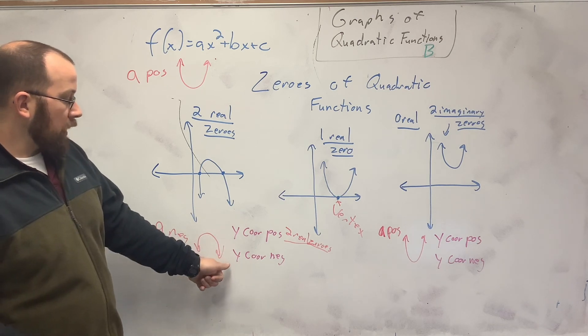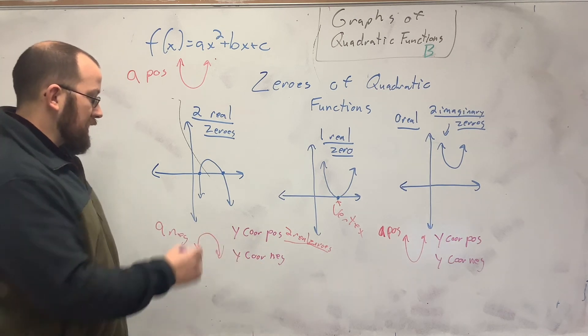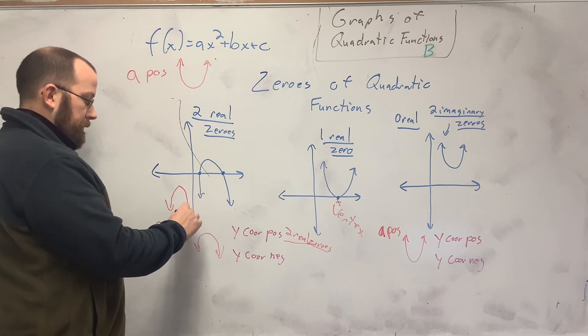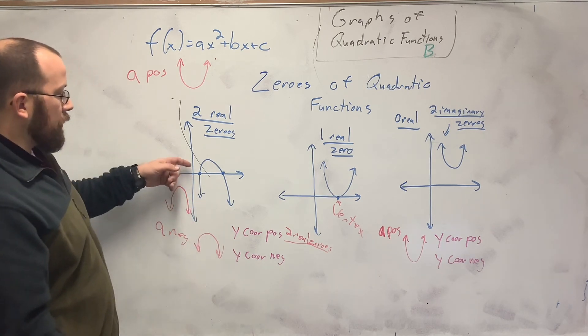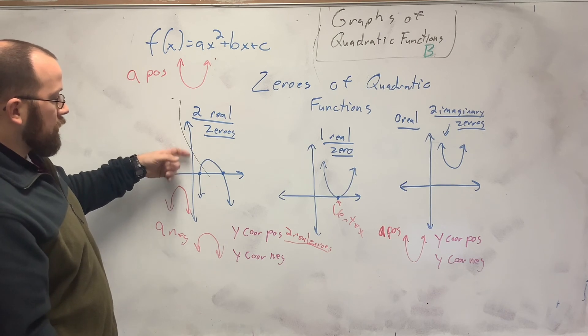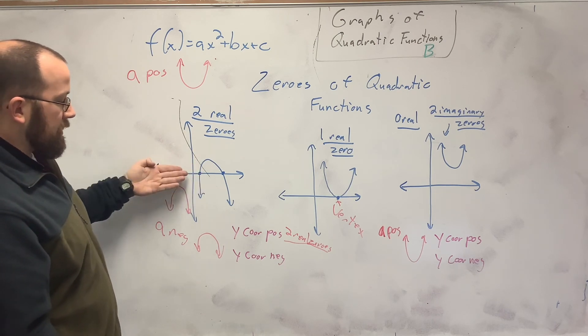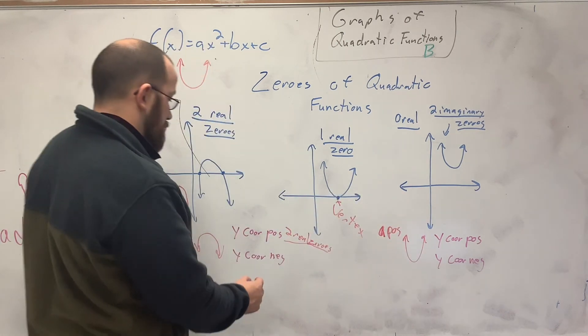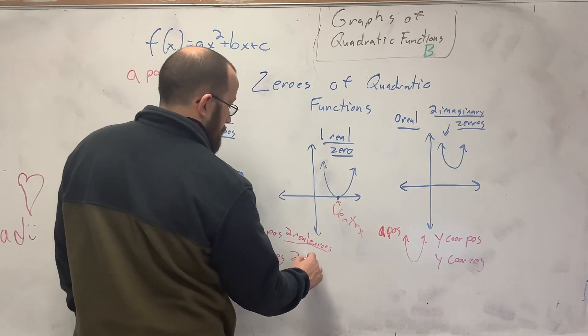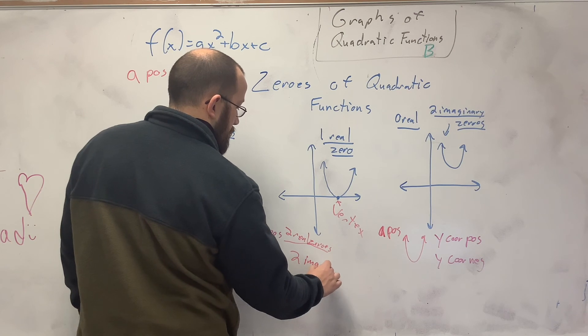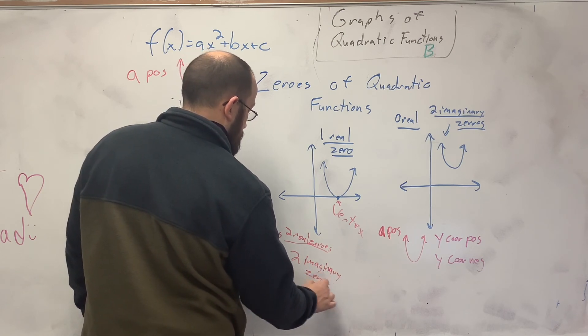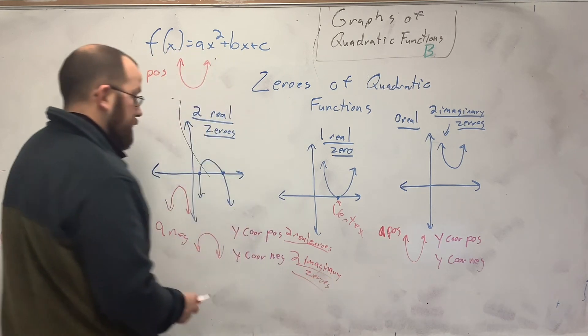So if I have a frowny face and my y-coordinate is negative, so any one down here, it'll never get above the x-axis. It'll never get above zero. So that one, you're going to have two imaginary zeros.